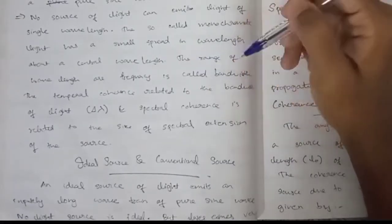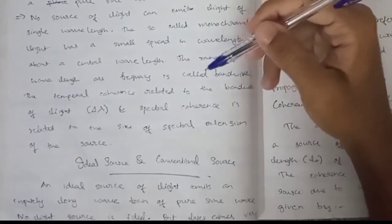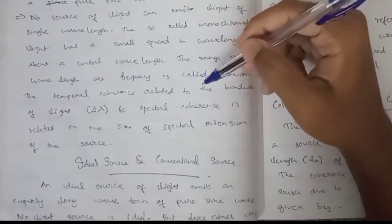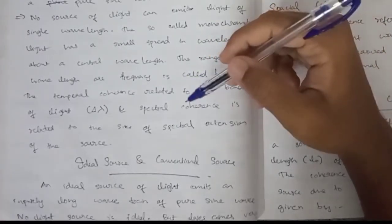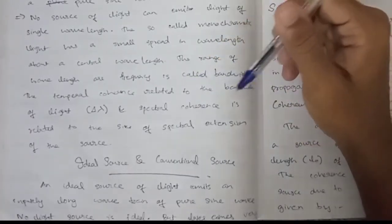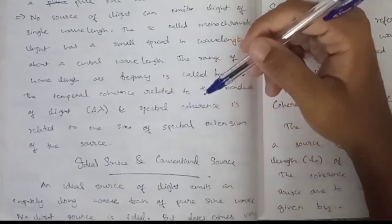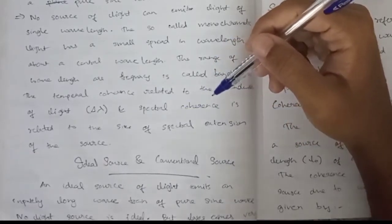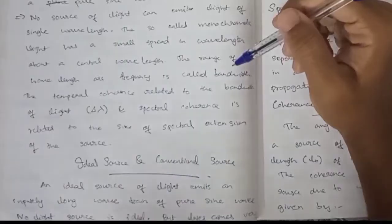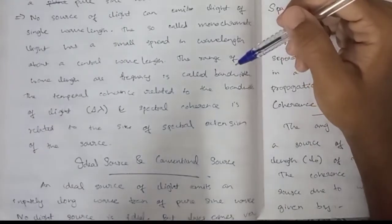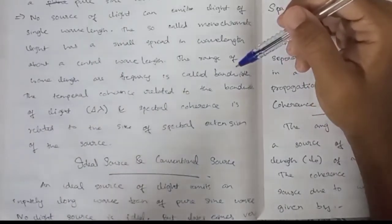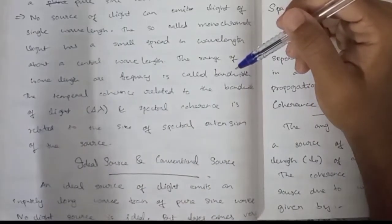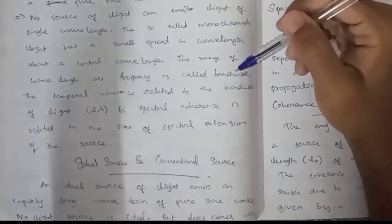The range of wavelength or frequency is called bandwidth. Temporal coherence is related to the bandwidth of light, delta lambda. Spectral coherence is related to the size of the spectral extension of the source.